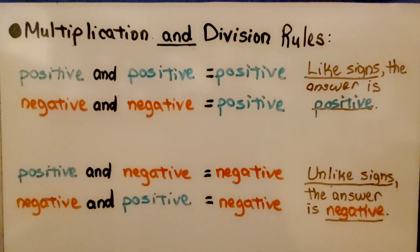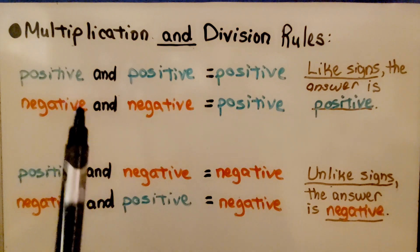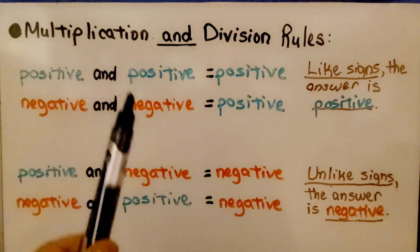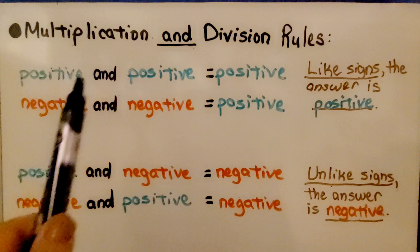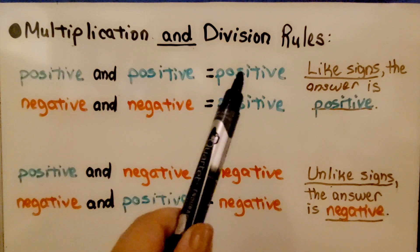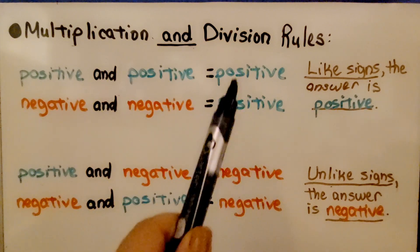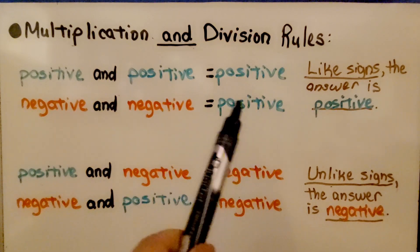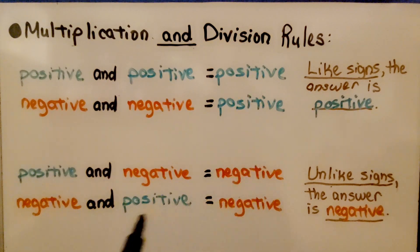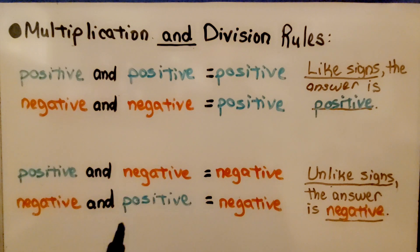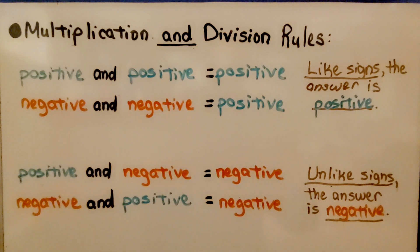We've learned the rules for multiplication and division of integers. If they have like signs, our product or quotient will be positive. And if they have unlike signs, our product or quotient will be negative.